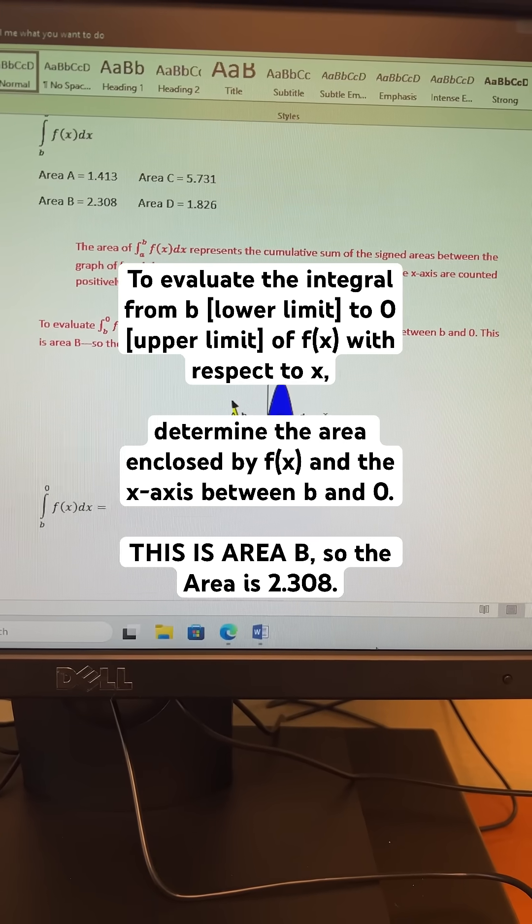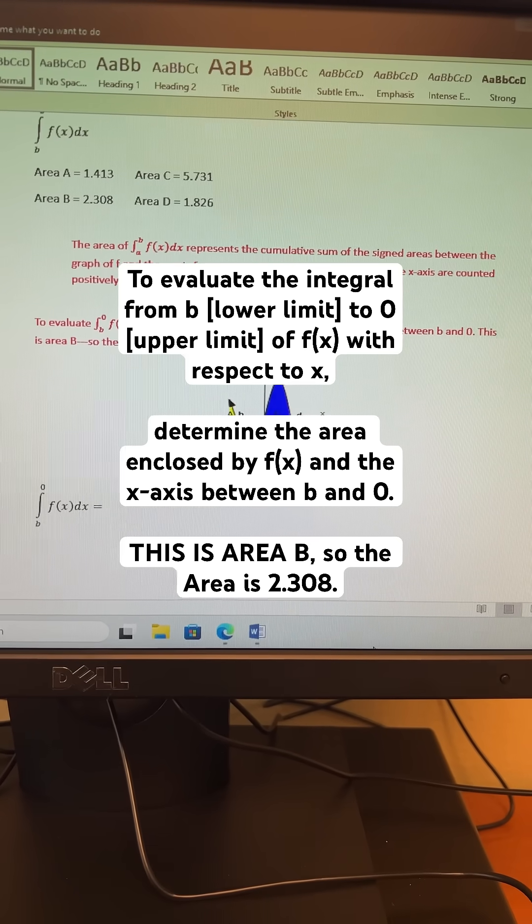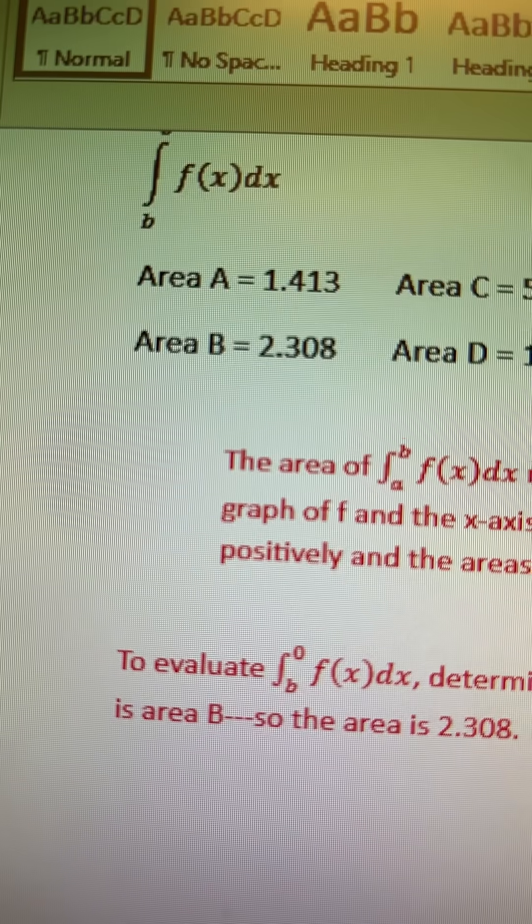This is area B, so the area is 2.308, as we can see right there.